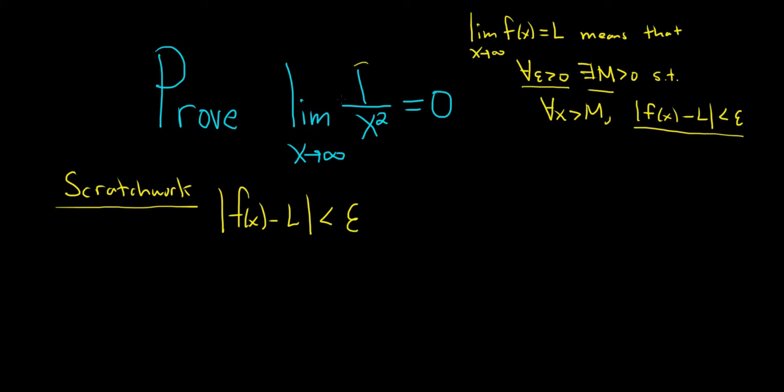Let's go ahead and fill everything in. So f of x is going to be 1 over x squared, and L in this problem is 0. So we have absolute value of 1 over x squared minus 0 is less than epsilon.